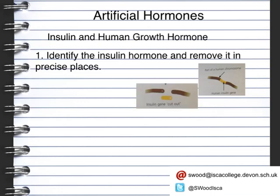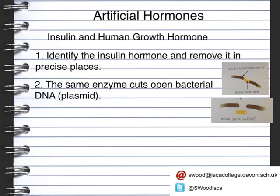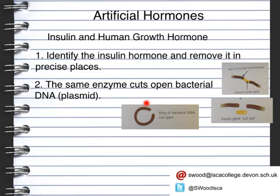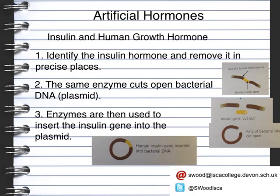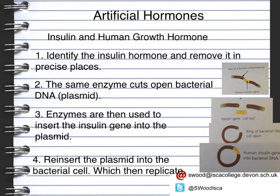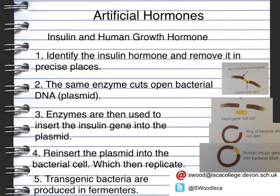You then have the isolated gene. The same enzymes are used to cut open the bacterial DNA. Bacterial DNA is circular and is known as a plasmid. Enzymes are then used to insert the insulin gene into the plasmid. Now that the insulin gene is in the plasmid, it can replicate so that you can get lots and lots of that gene producing the insulin hormone. The final stage is that the transgenic bacteria are then added to fermenters to produce large-scale quantities of insulin.